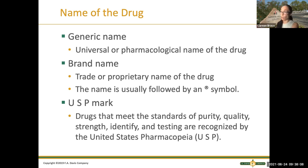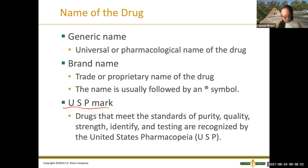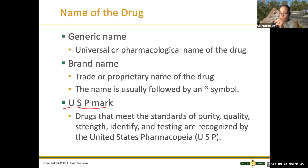There's something else we need to know on the label: the USP mark. The USP mark is a measure of standard — it stands for US Pharmacopoeia. It means medications that have already met the standards and quality of strength and have been already tested. They are recognized by the United States Pharmacopoeia, and you will see that medications have USP next to them.